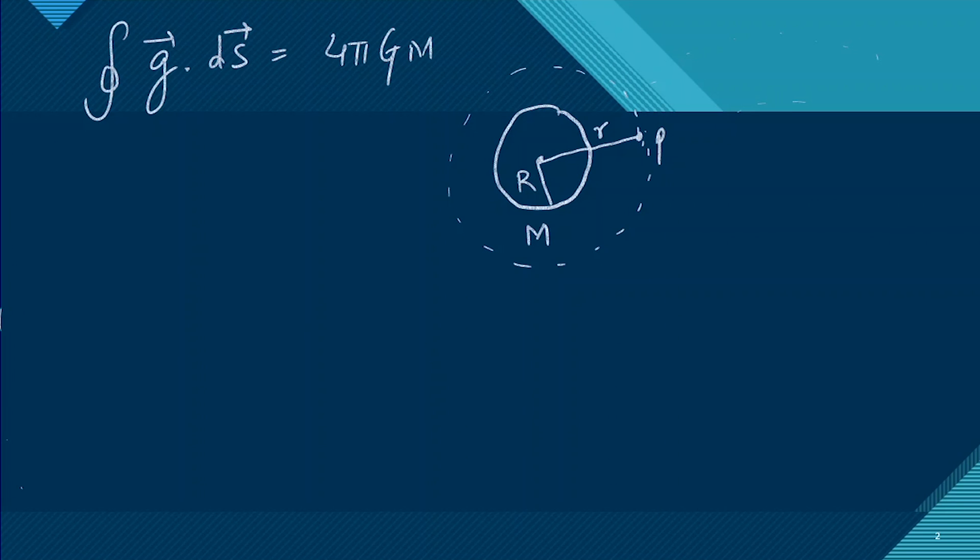The surface area of this Gaussian surface will be 4πr². We know the gravitational field is acting towards the center. Let's say this is a small surface dS, and this area vector will be pointing outward. Both are opposite to each other.